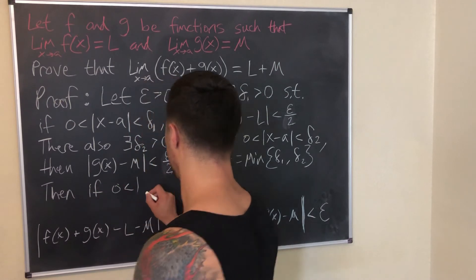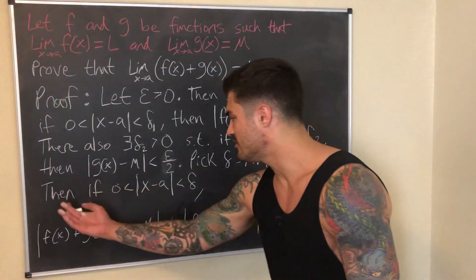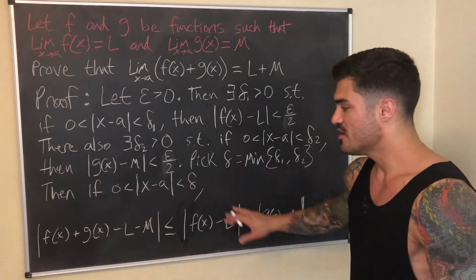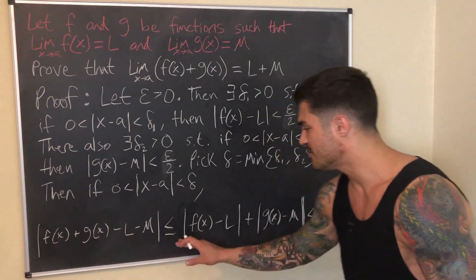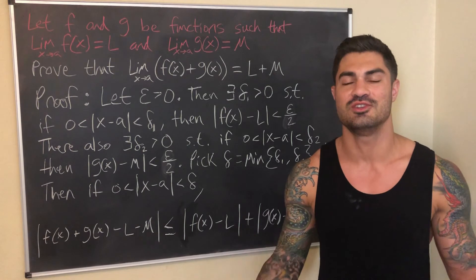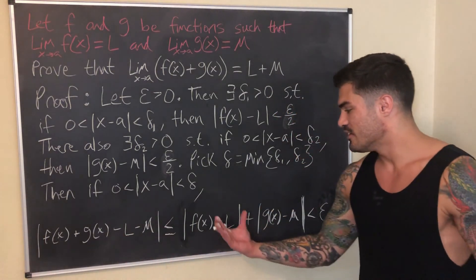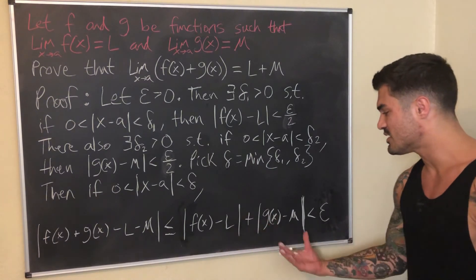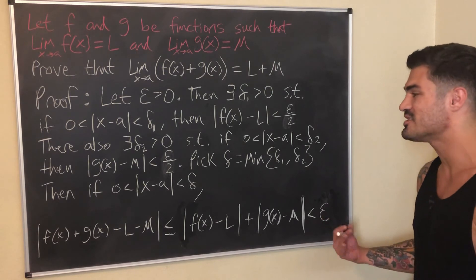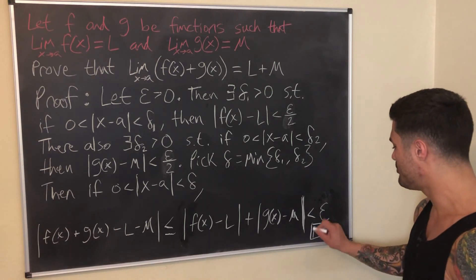With that choice of Delta, if |x − a| < Delta, then both conditions hold. By the triangle inequality, |f(x) + g(x) − L − M| ≤ |f(x) − L| + |g(x) − M| < ε/2 + ε/2 = Epsilon. Proof complete — there's my happy little box.